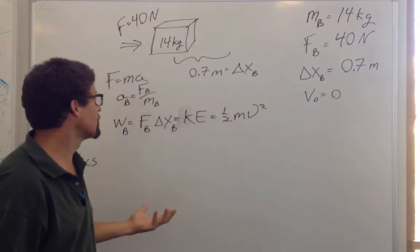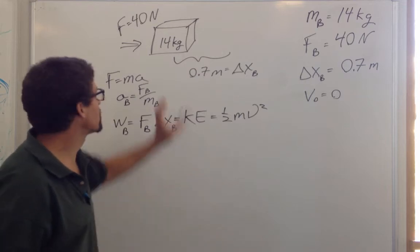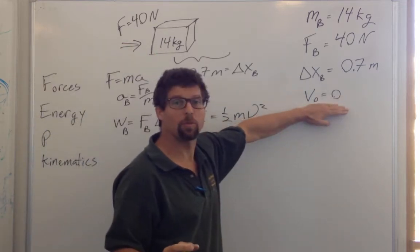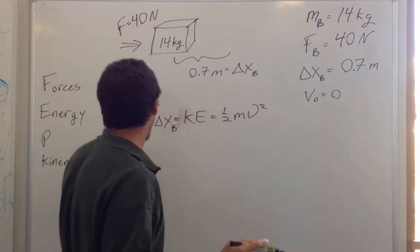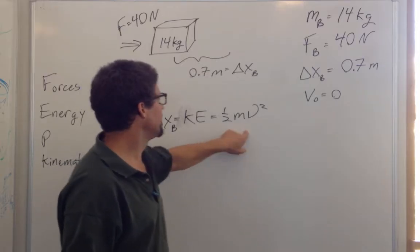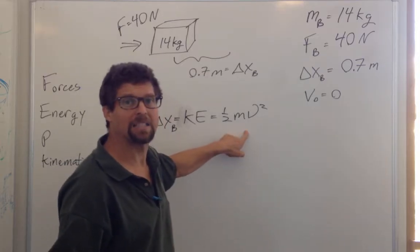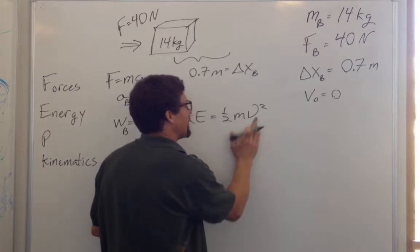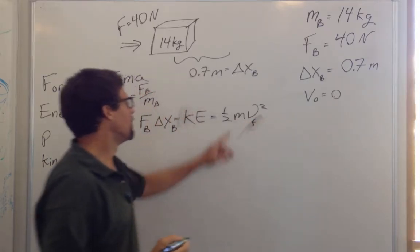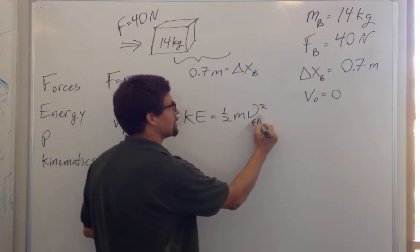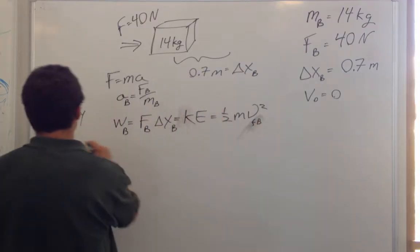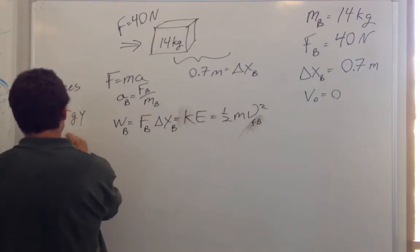You might want to ask: was there any initial energy? The box was originally at rest, so all of that work becomes all the kinetic energy the box has at the end. We can write V-final for the final velocity of the box. Then consider: what about change in momentum?